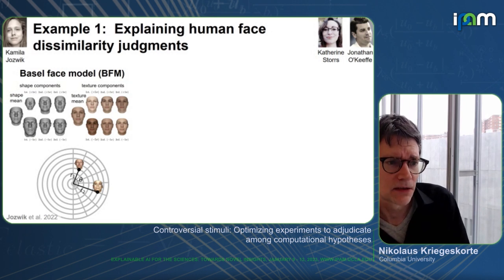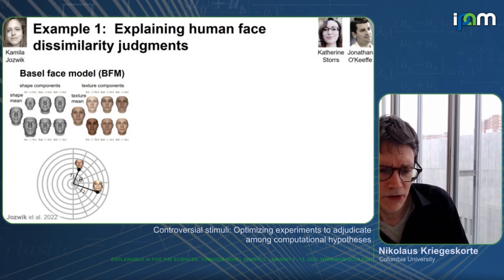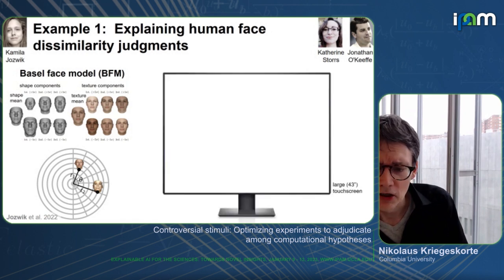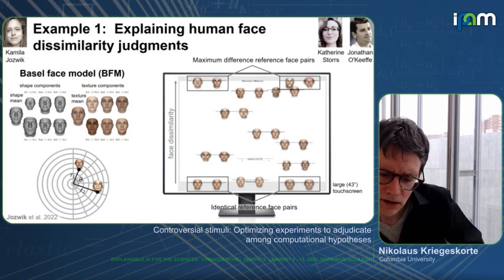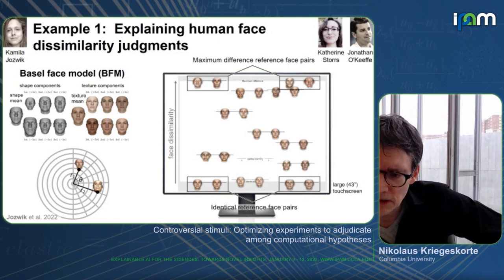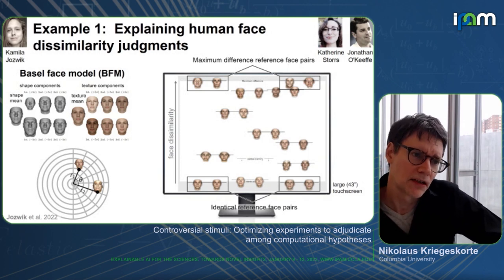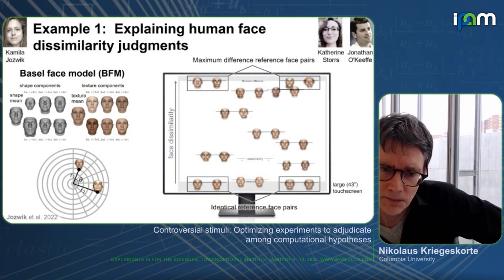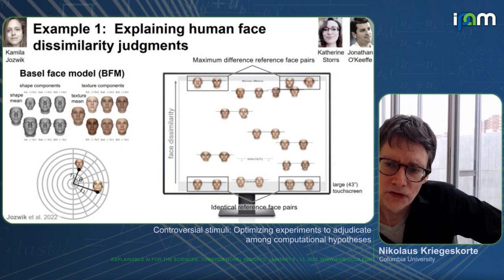They sampled pairs of faces spanning particular angles in the Basel face space — a latent space derived by PCA from 3D scans of actual human faces. They sampled ranges of angles and radii from the center of the face space, which is the average face, generating a number of face pairs. Human subjects were then asked to arrange these face pairs on a touch screen by their perceived dissimilarity, dragging them to different vertical positions.